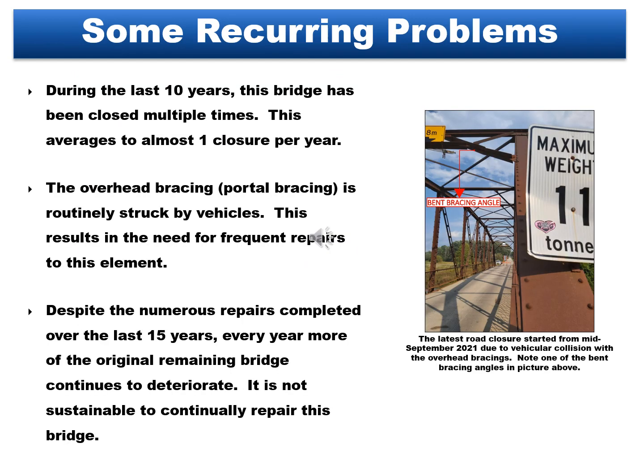Some recurring problems: during the last 10 years, this bridge has been closed multiple times, averaging almost one closure per year. The overhead portal bracing is routinely struck by vehicles, resulting in the need for frequent repairs to this element. Despite the numerous repairs completed over the last 15 years, every year more of the original remaining bridge continues to deteriorate. It is not sustainable to continually repair this bridge. The latest road closure started from mid-September 2021 due to vehicular collision with the overhead bracings. Note one of the bent bracing angles in the picture above.